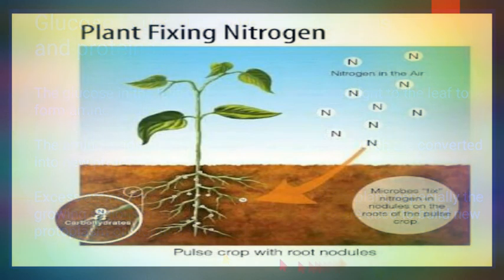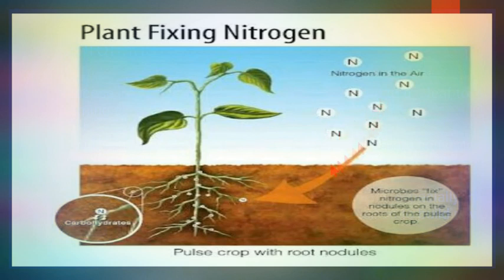This is a pulse crop, and it has root nodules. These root nodules contain nitrogen-fixing bacteria. Nitrogen in the atmosphere cannot be directly absorbed by plants, so these bacteria present in root nodules fix atmospheric nitrogen into the form of nitrates and nitrites, which the plant then absorbs to form protein.